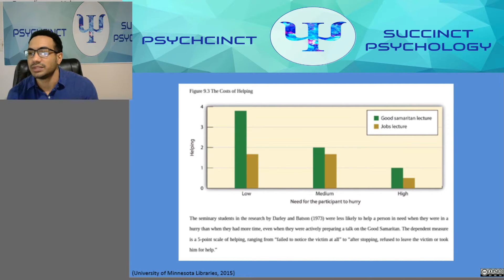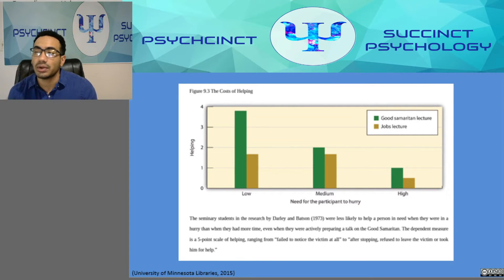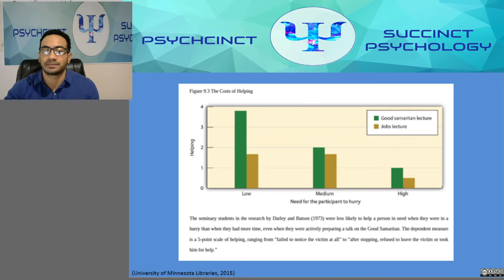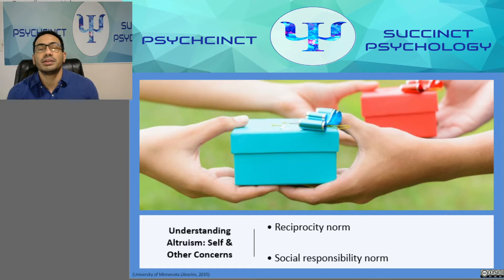In the graph, green represents the Good Samaritan lecture and brown represents the job lecture. There is no significant difference between them in the medium and high time-pressure conditions, but in the low time-pressure condition the Good Samaritan lecture did show a bigger difference from the job lecture. The outcome of reinforcement and modeling of helping is the development of social norms of morality — standards of behavior we see as appropriate and desirable.